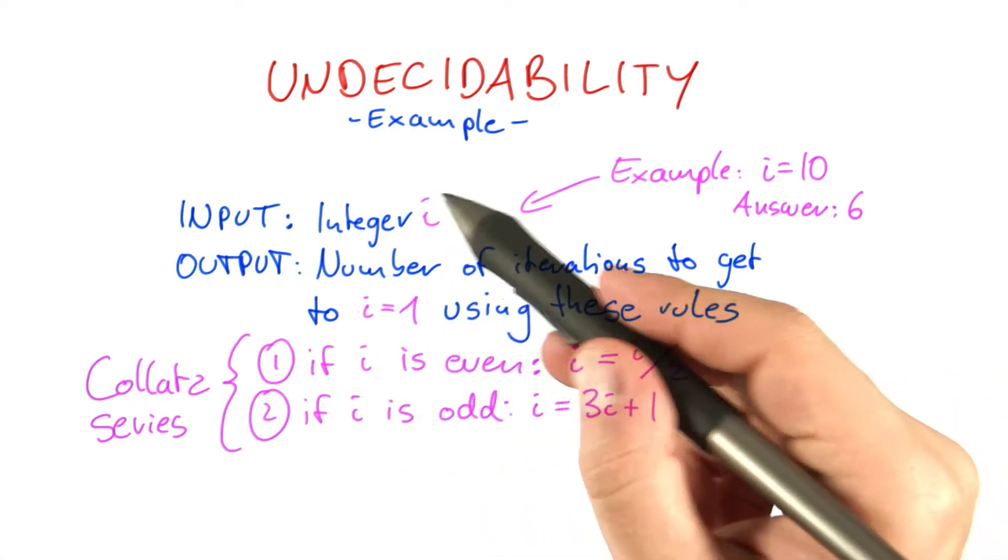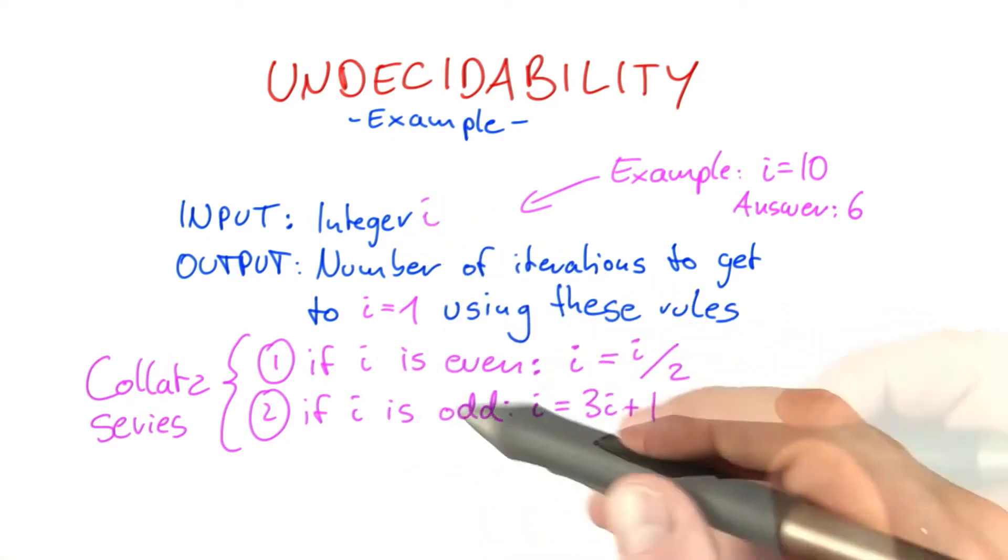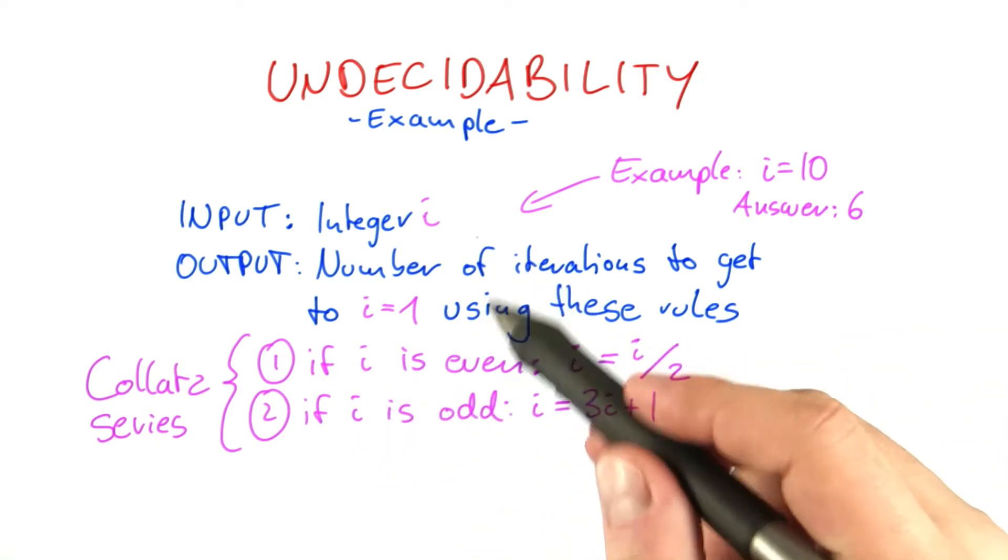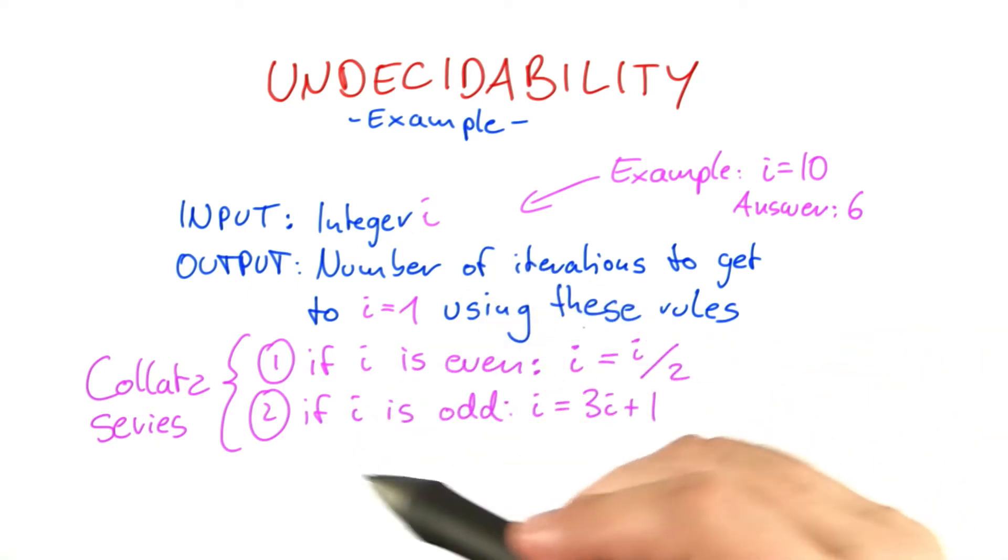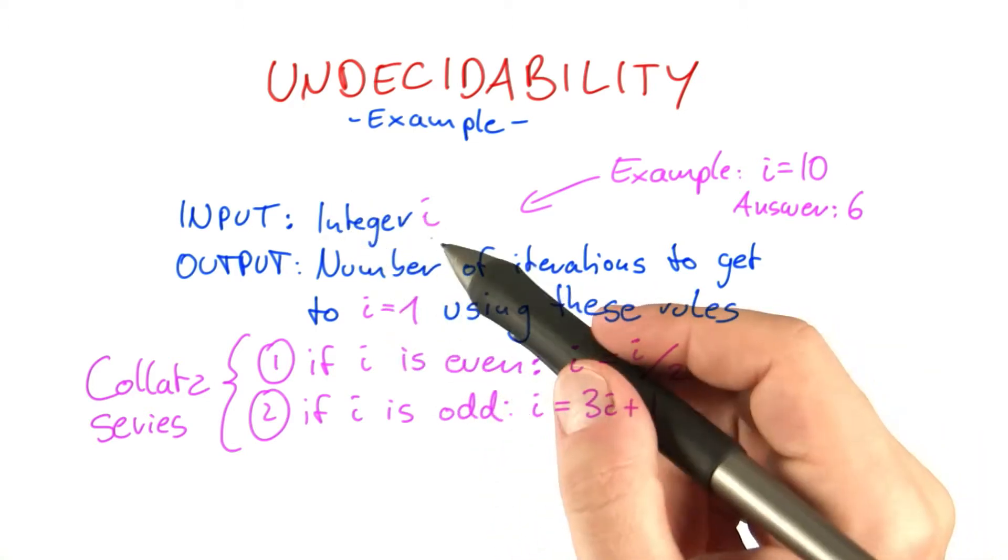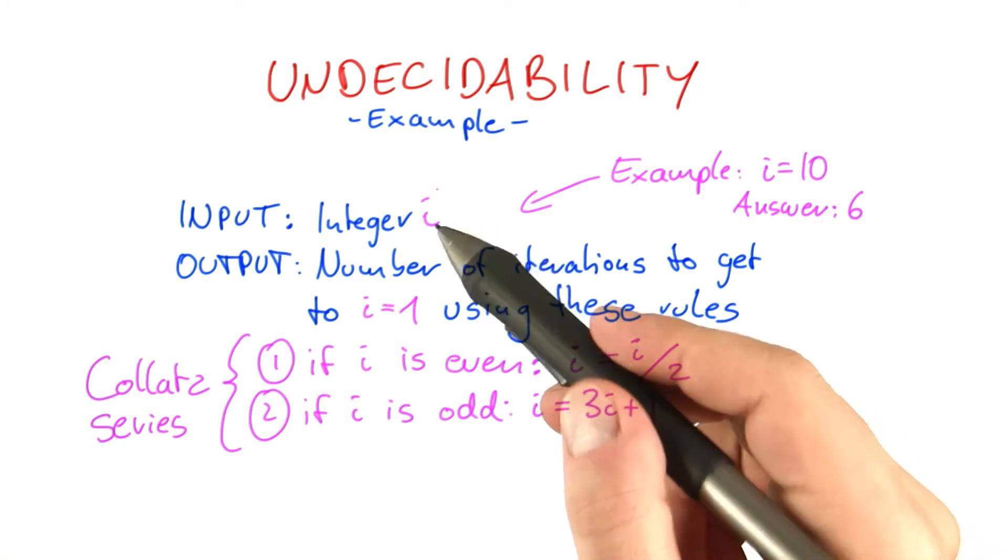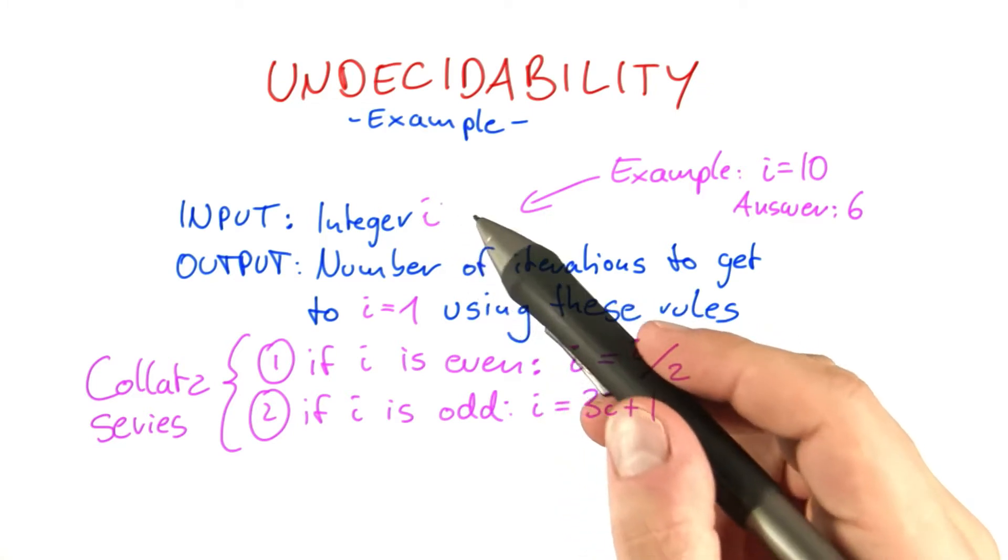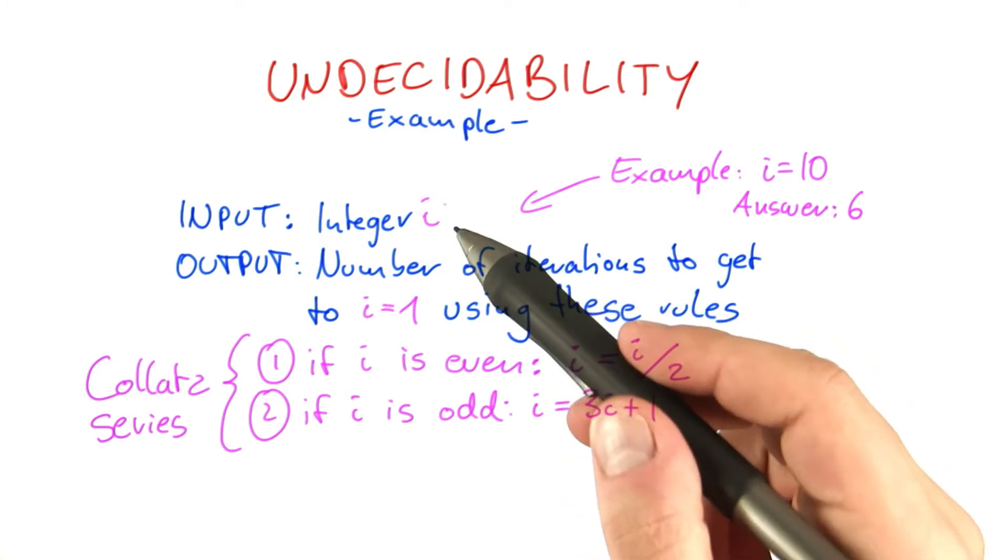Sometimes it will terminate very quickly for certain values of i, and sometimes actually it will behave super erratic, and it will go up and down and up and down until it finally terminates. Now here's the thing. It has been conjectured that this algorithm here will terminate for any value of i. But so far, nobody has been able to prove that.